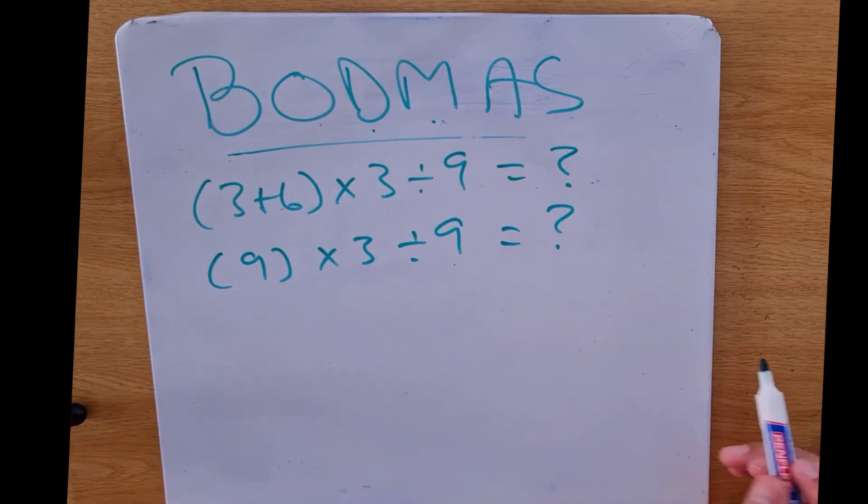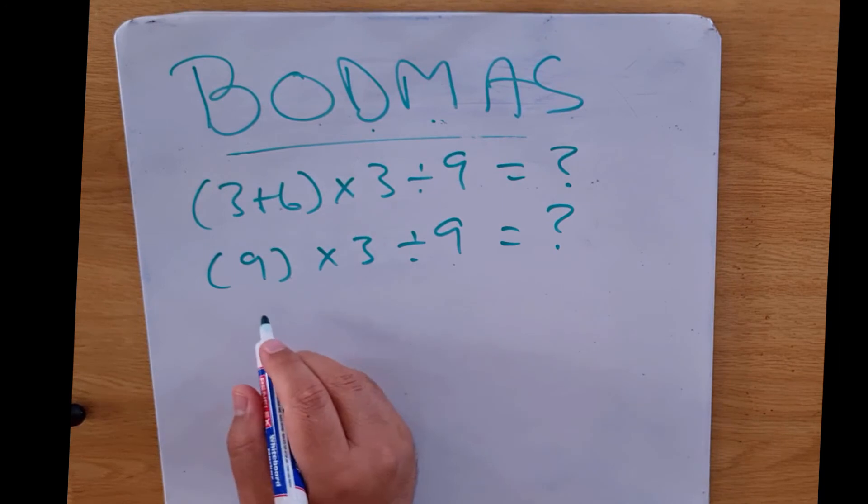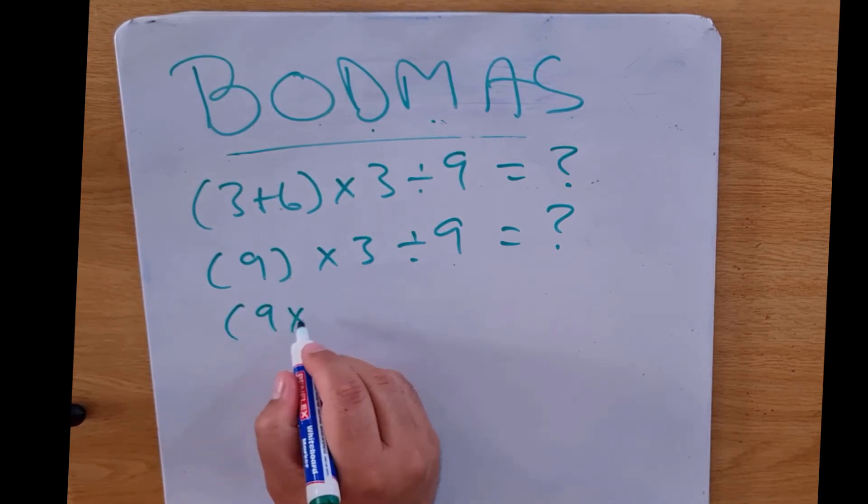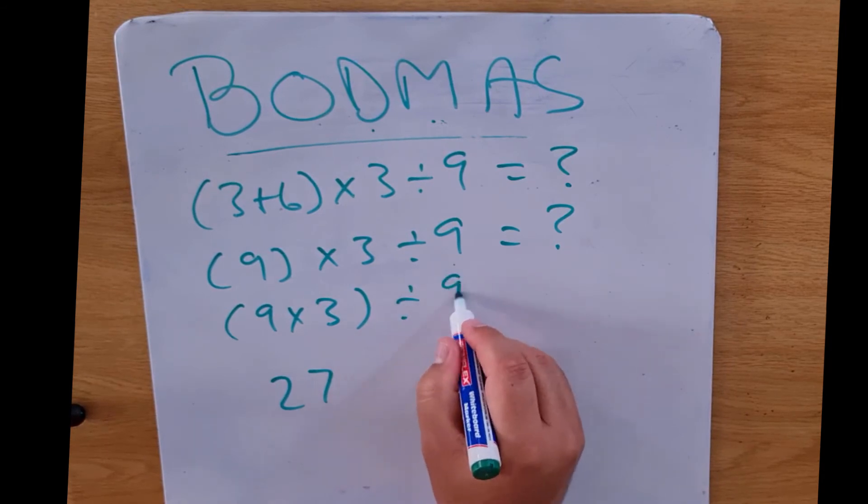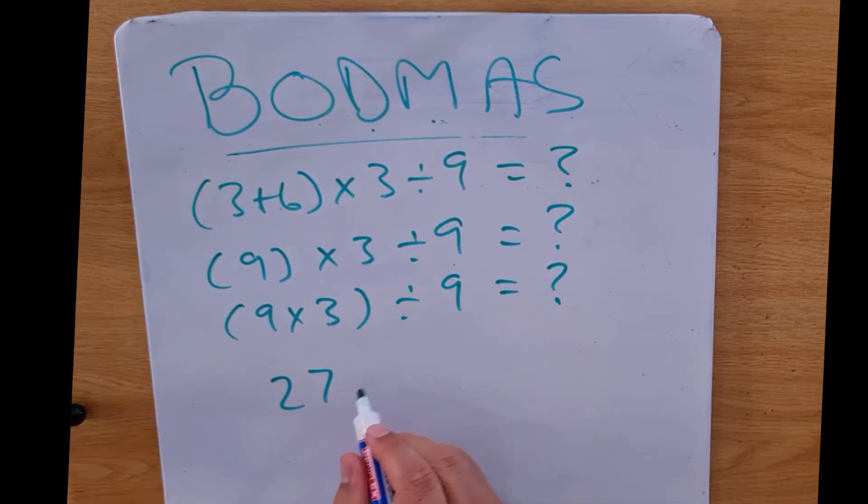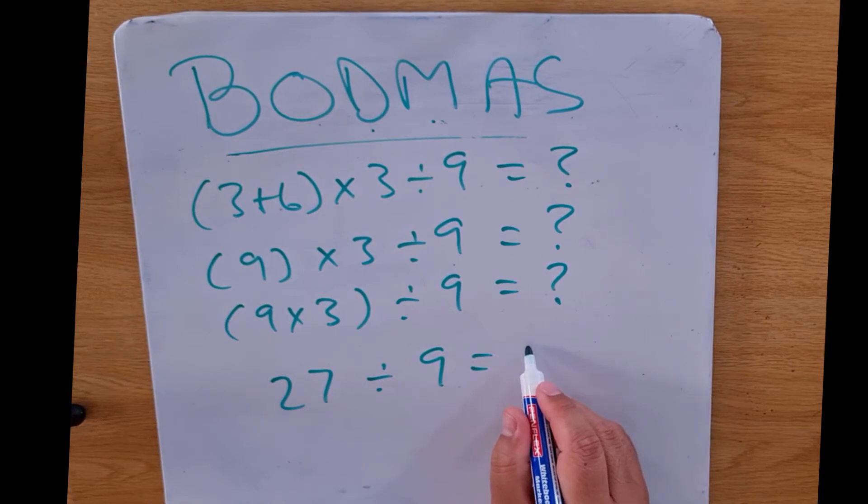What are we going to do now? According to left to right, what's the next thing we've got? It's our multiplication. We already know what that is. And the last thing we've got to do is divide, and that becomes 3.